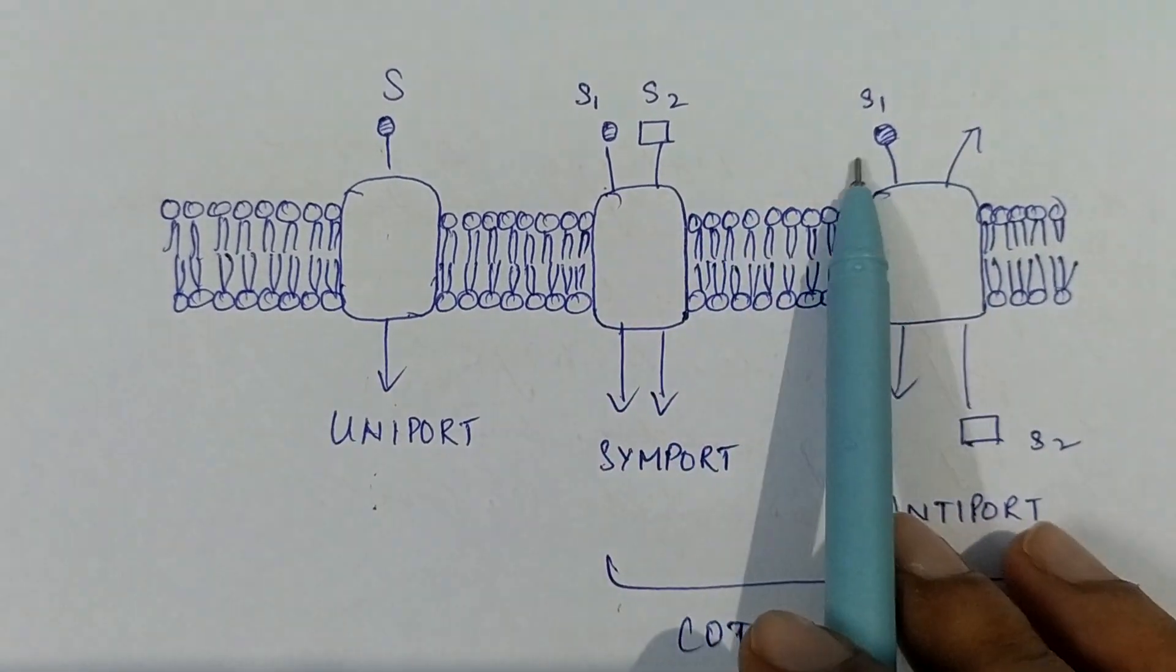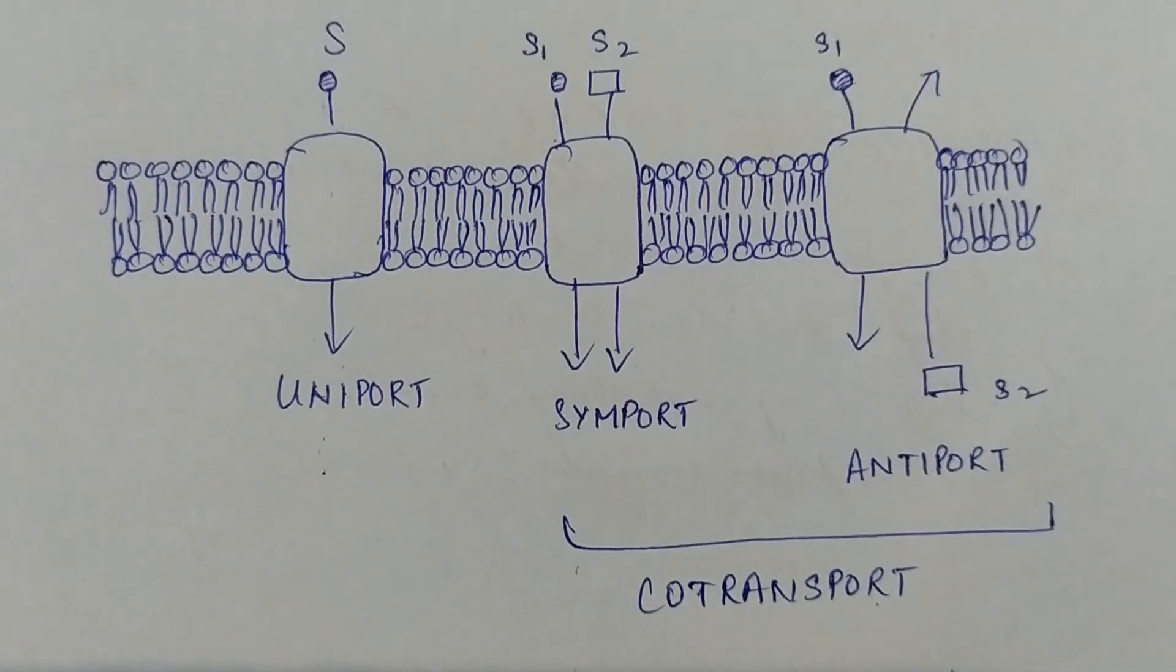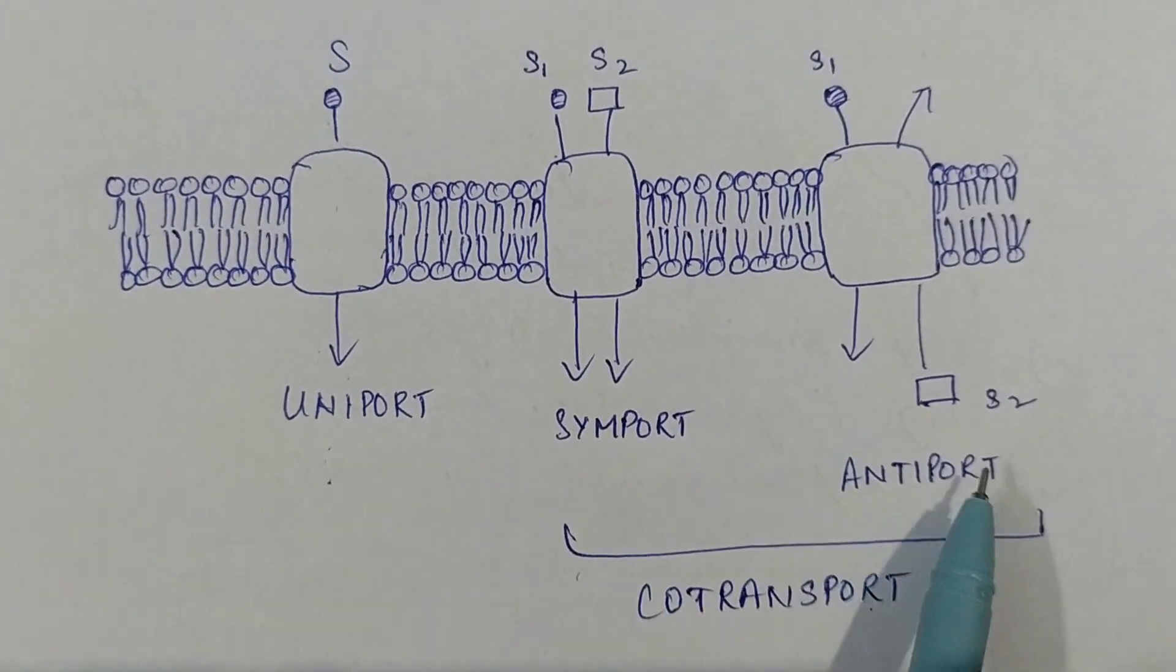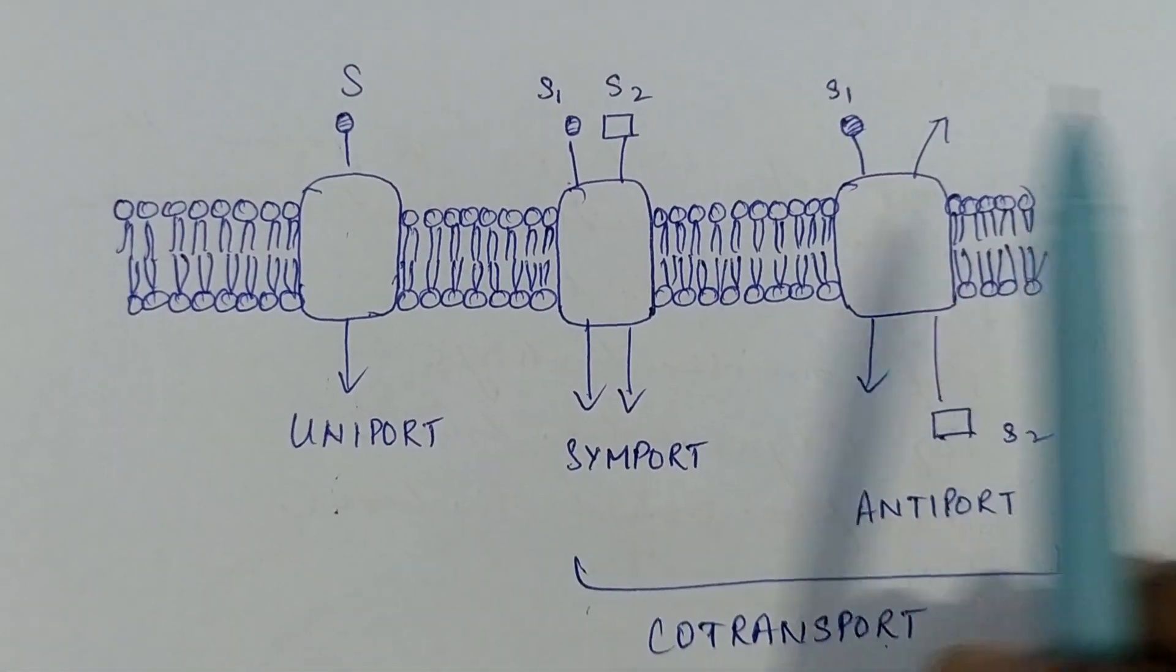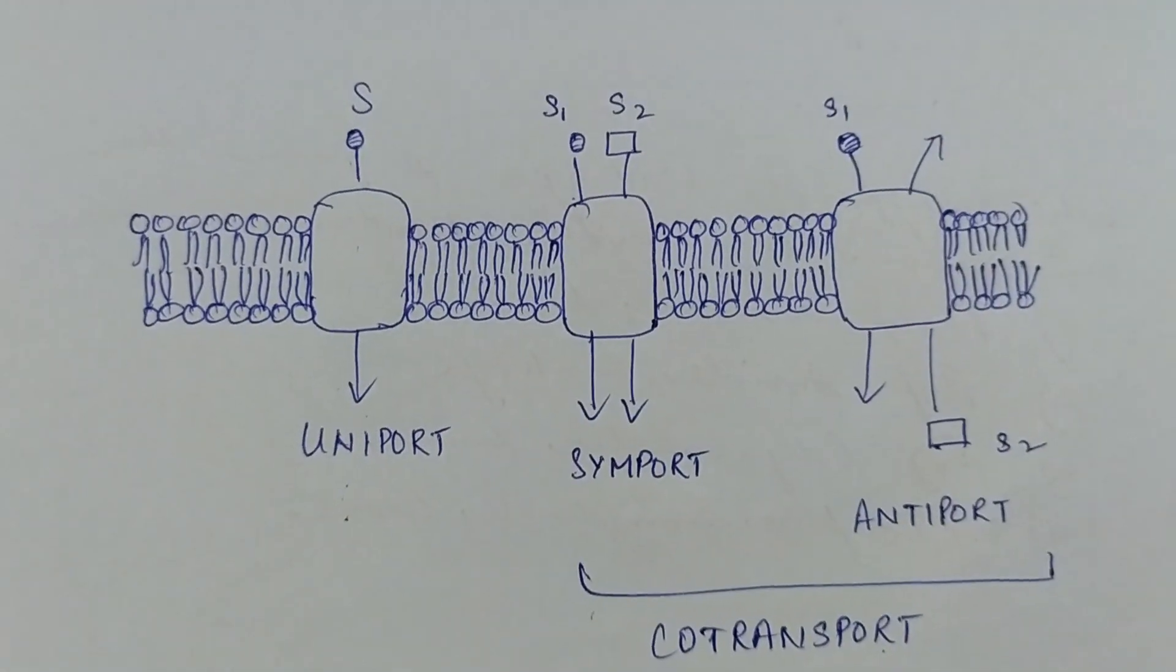Like we talked about in the previous video about active transport, co-transport is of two types - it may be symport or antiport. Symport means sim means same.